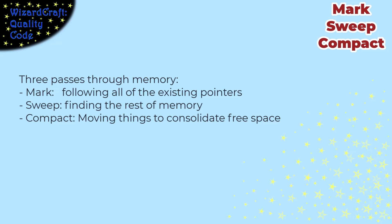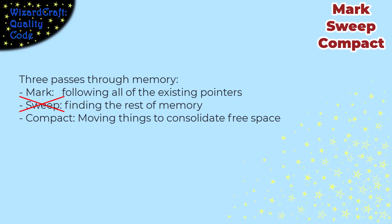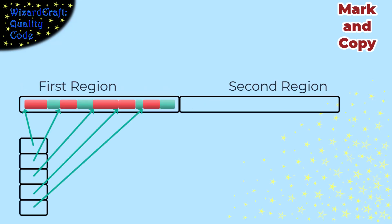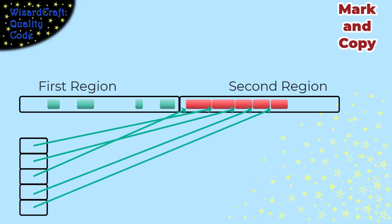Mark-sweep-compact is expensive because it makes three passes through memory. Recognizing that the compact phase copies almost every allocation, we can eliminate the sweep phase entirely with a strategy called mark-and-copy. We divide memory into two regions that we alternate using. As we mark objects by following pointers from the garbage collection roots, instead of just marking them, we copy each one into the other memory region and update the table. When we finish, everything left in the first region is no longer in use and is automatically freed, and the second region is already compacted with no fragmentation. The cost is that half our memory is unused at any point in time.